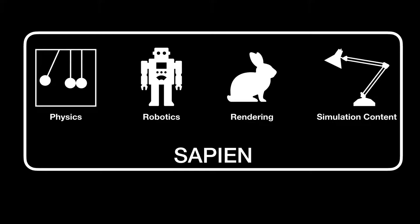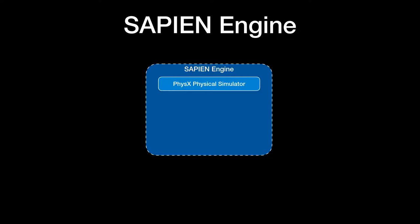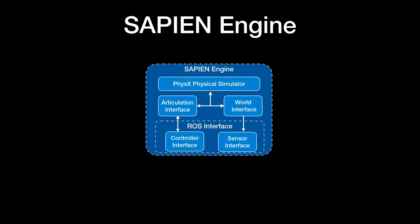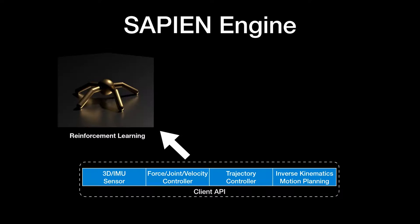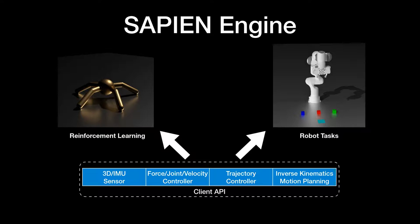Let's start by looking at the Sapien Engine that handles physics and robotics. Sapien Engine is built on the PhysX Physical Simulator. We expose the articulation interface for robotics and world interface for accessing everything in the simulated world. We integrate the Robotics Operating System, or ROS, in Sapien Engine to support various sensors, controllers, and high-level motion planning algorithms for client-side use. With these features, Sapien Engine is able to support standard reinforcement learning scenarios and robotics tasks. Software depending on ROS can view our simulated robot as if it is a real one.